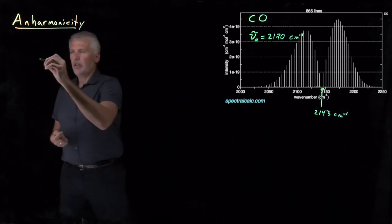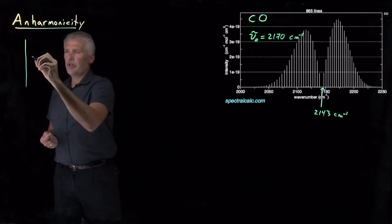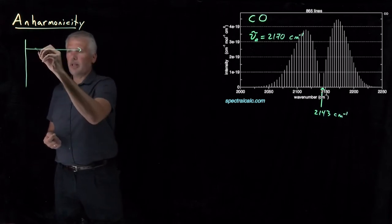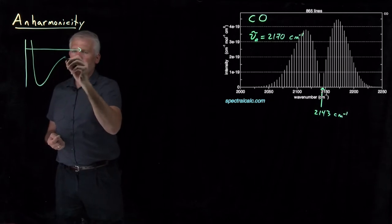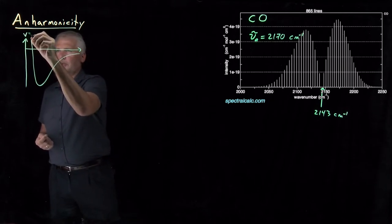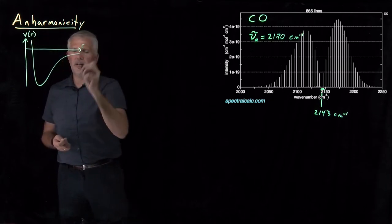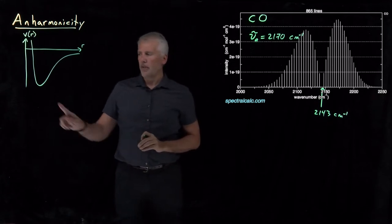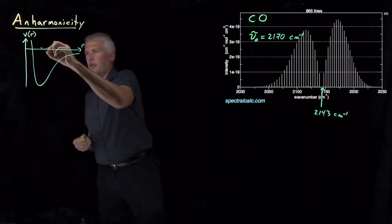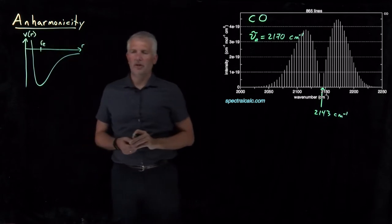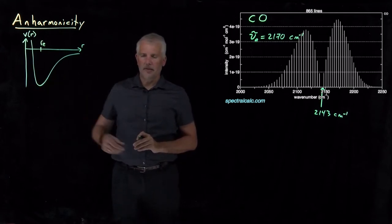Remember when we first started talking about the harmonic oscillator, this curve is what the potential energy looks like for a real molecule. There's some bond length that we call the equilibrium bond length, where the energy is lowest, and then the energy rises on either side of that.